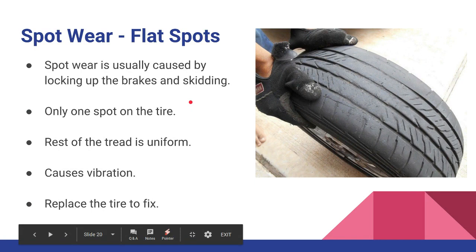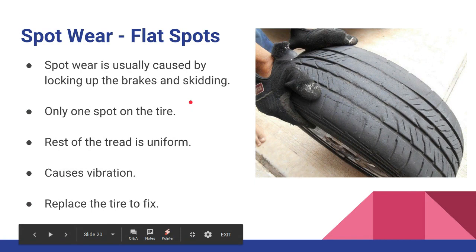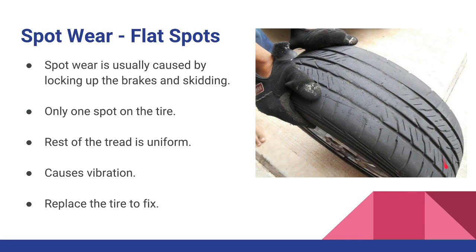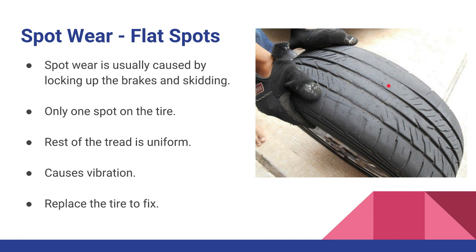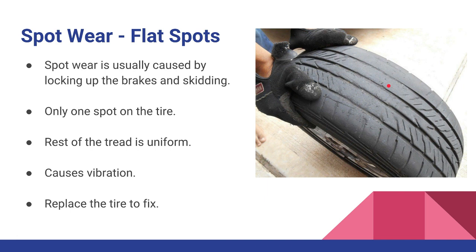Spotty tire wear: the first type is flat spots. This is an extreme example — the rest of the tread is good and thick but this area is almost non-existent. This is commonly caused by locking up the tires on the road. With ABS systems that shouldn't happen unless sliding sideways, so make sure the ABS is working properly. If the customer braked so hard it locked up, that's the wear you'll see. It may not be this severe and you may not notice it until the tread gets thin. This will cause a bad vibration and the tire must be replaced.